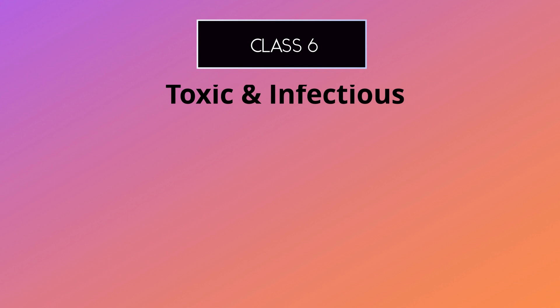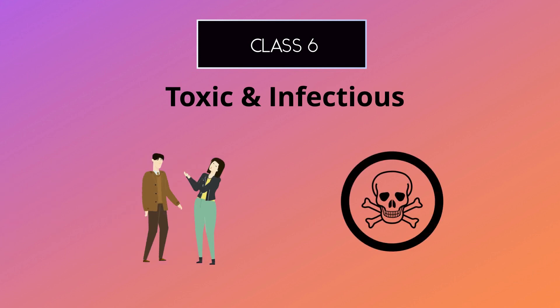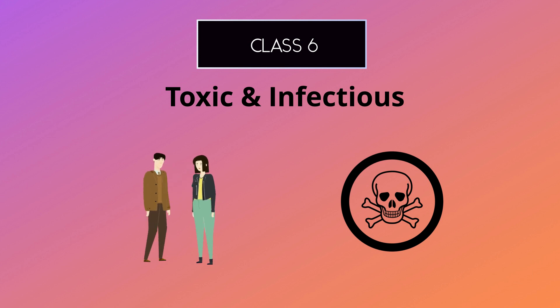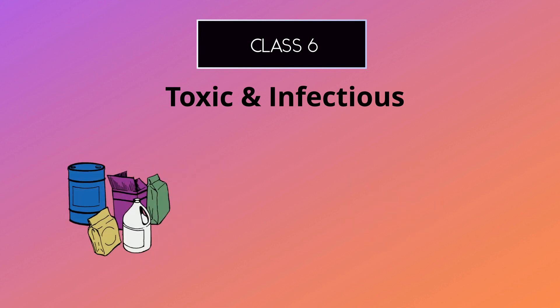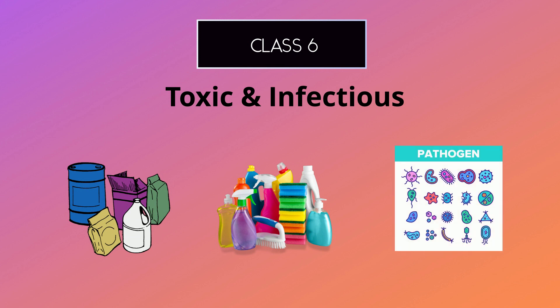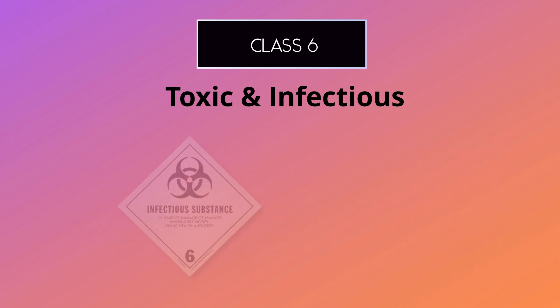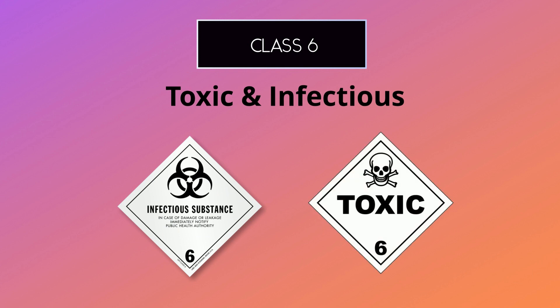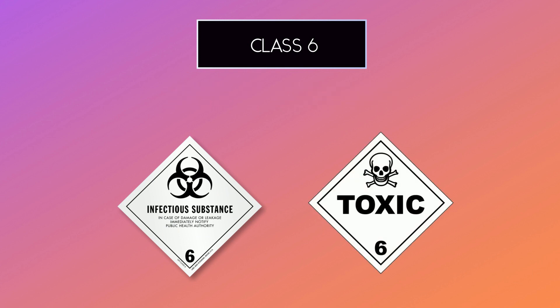The sixth class of dangerous goods is toxic and infectious substances. This class includes materials that are toxic to humans or that can cause infection — such as pesticides, certain types of cleaning chemicals, and biological pathogens. The symbol for toxic and infectious substances is a skull and crossbones with number six.